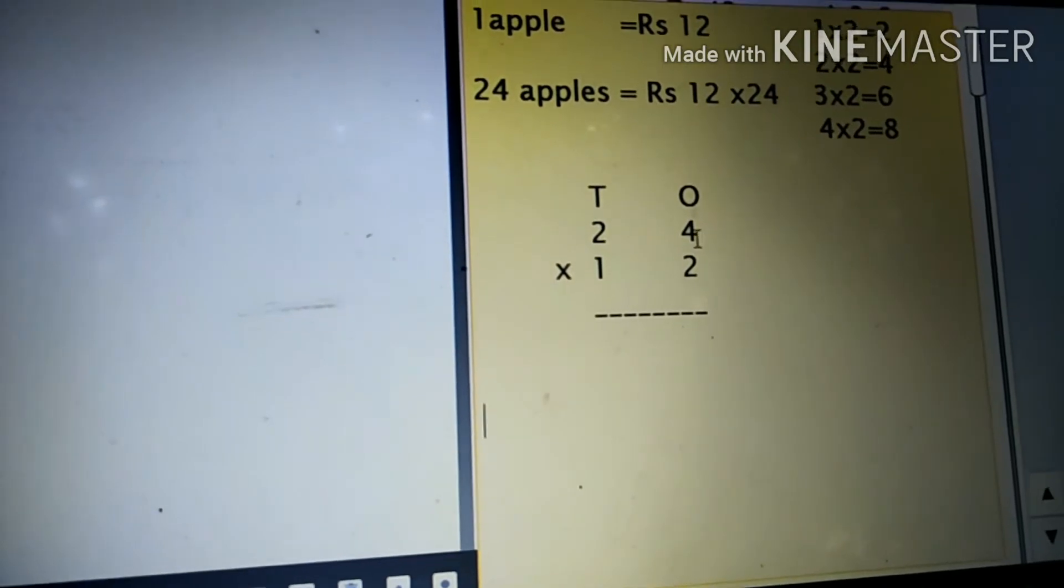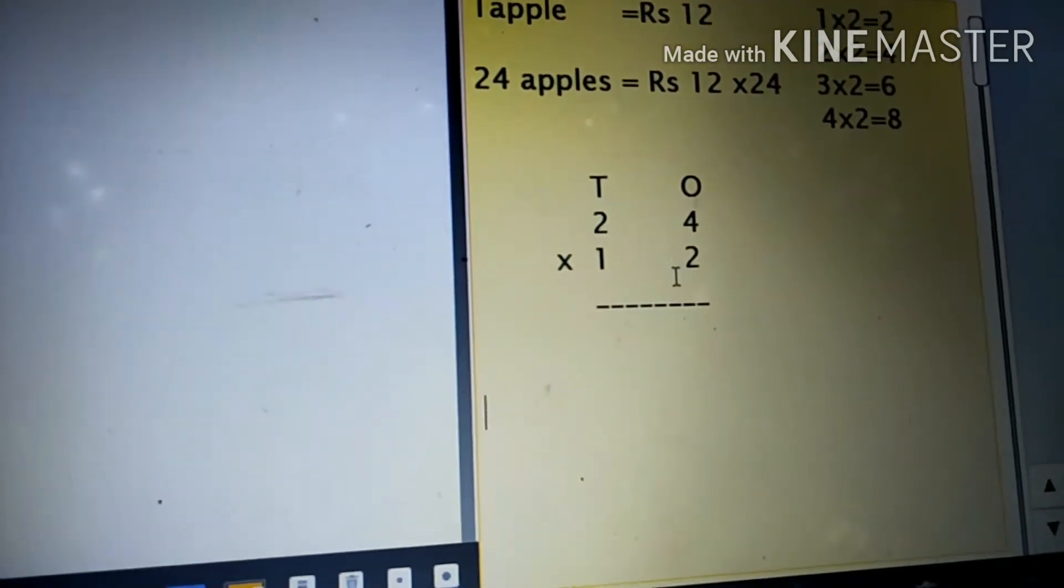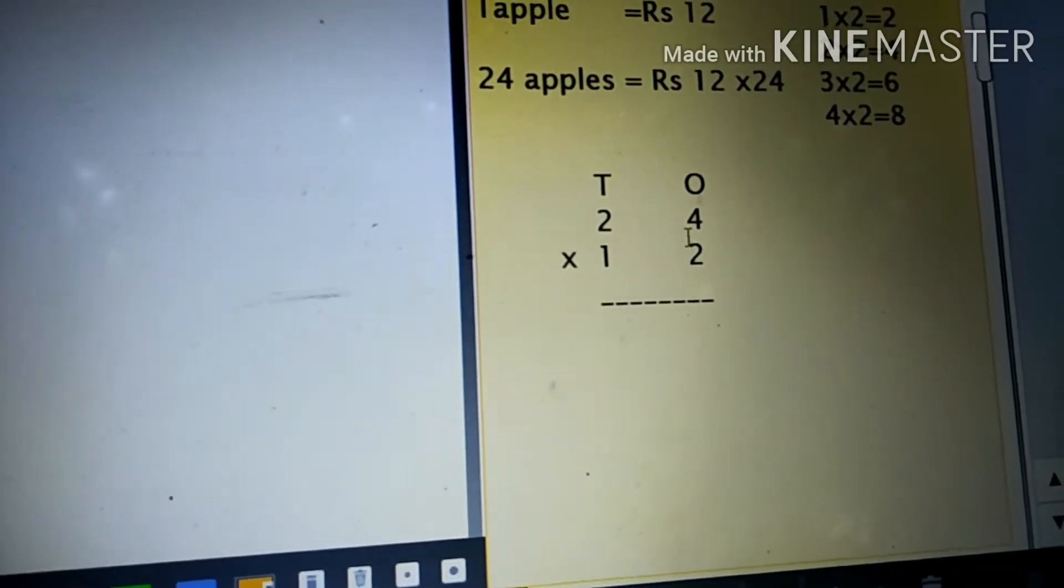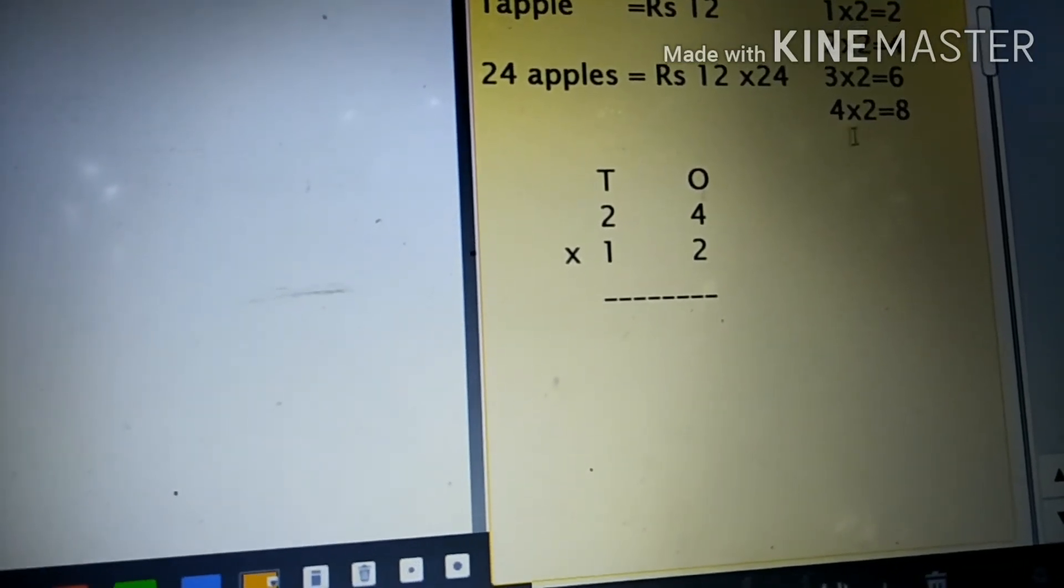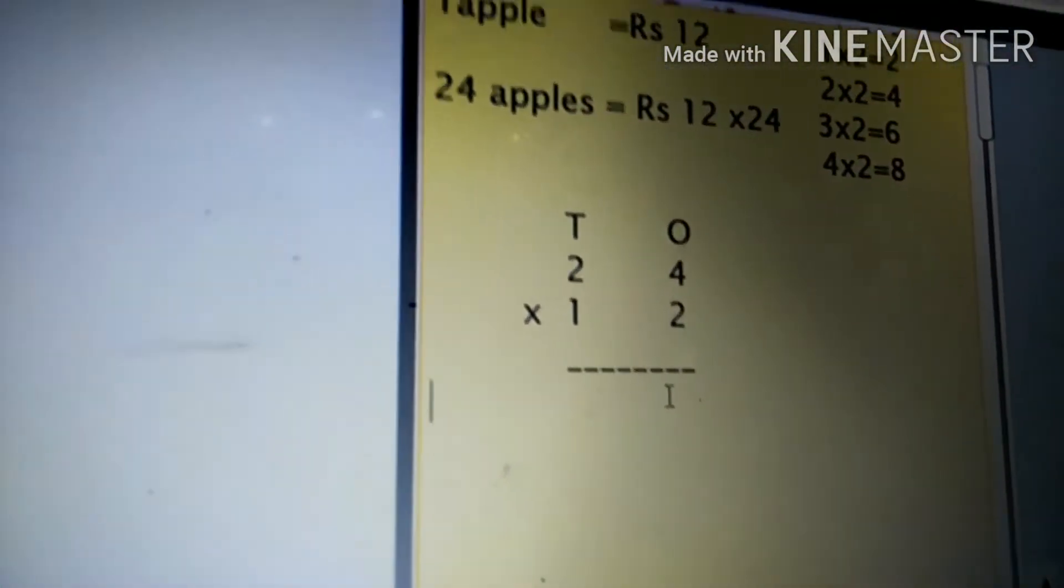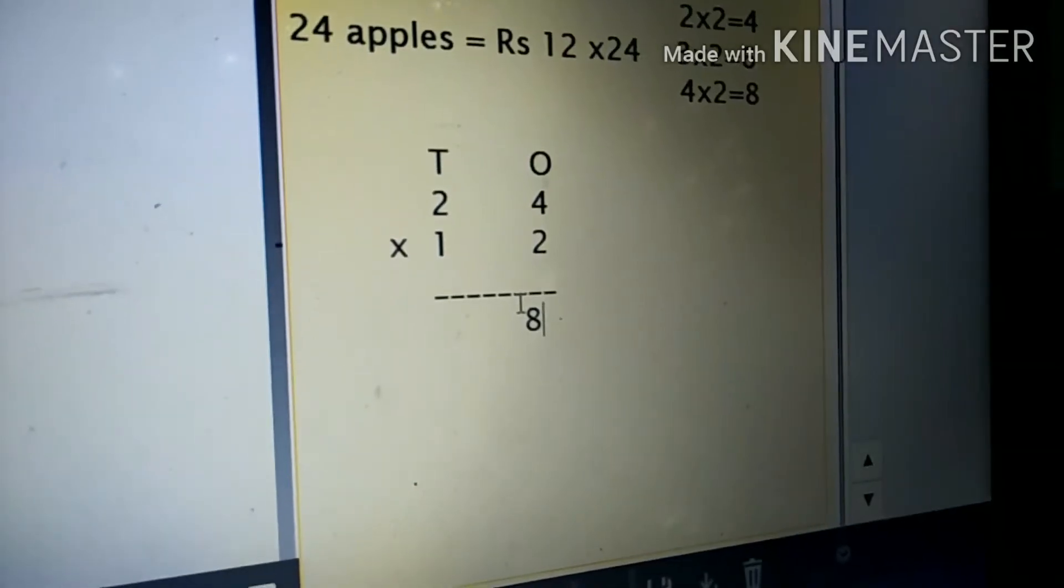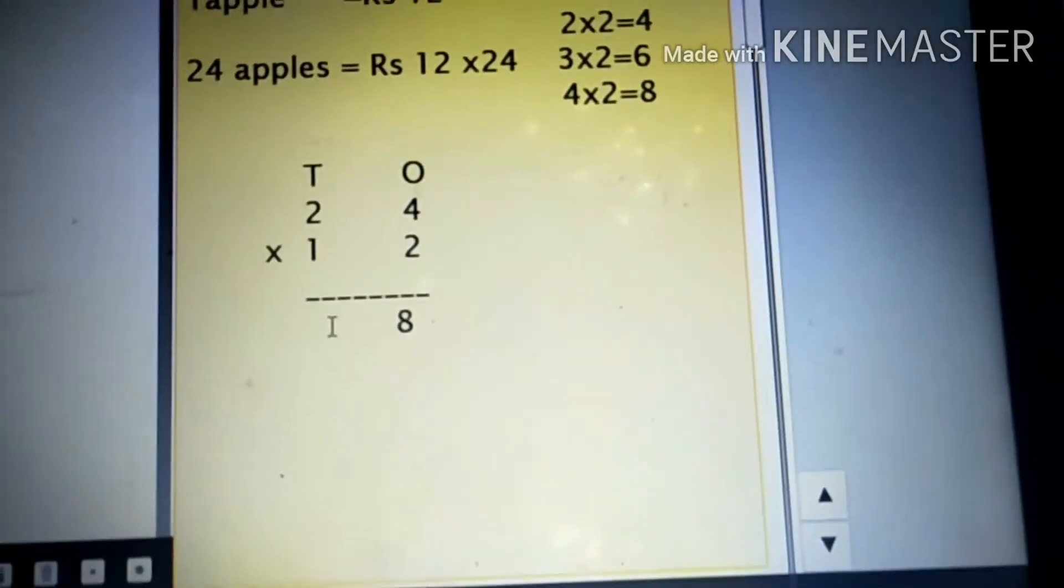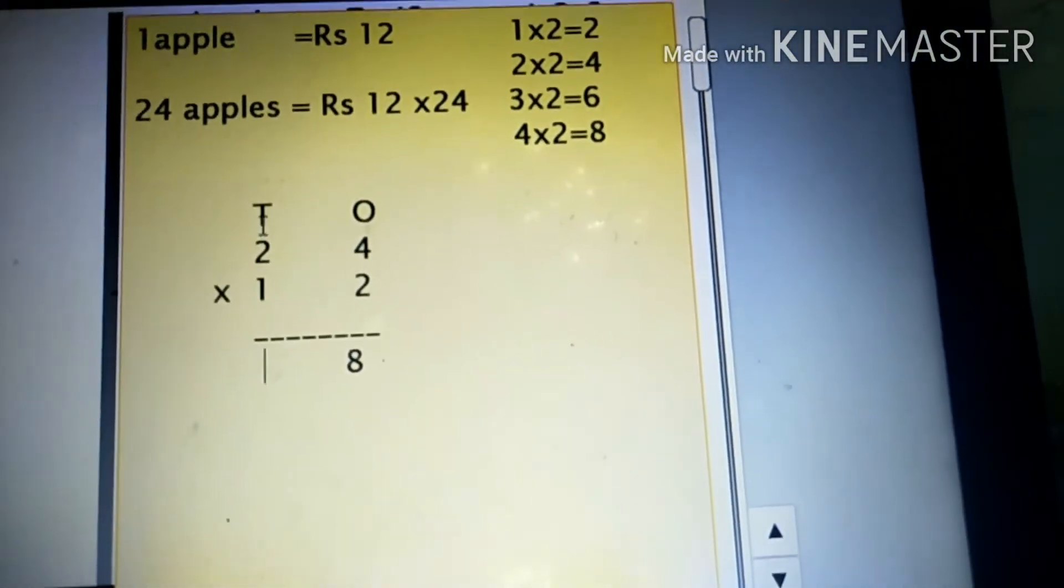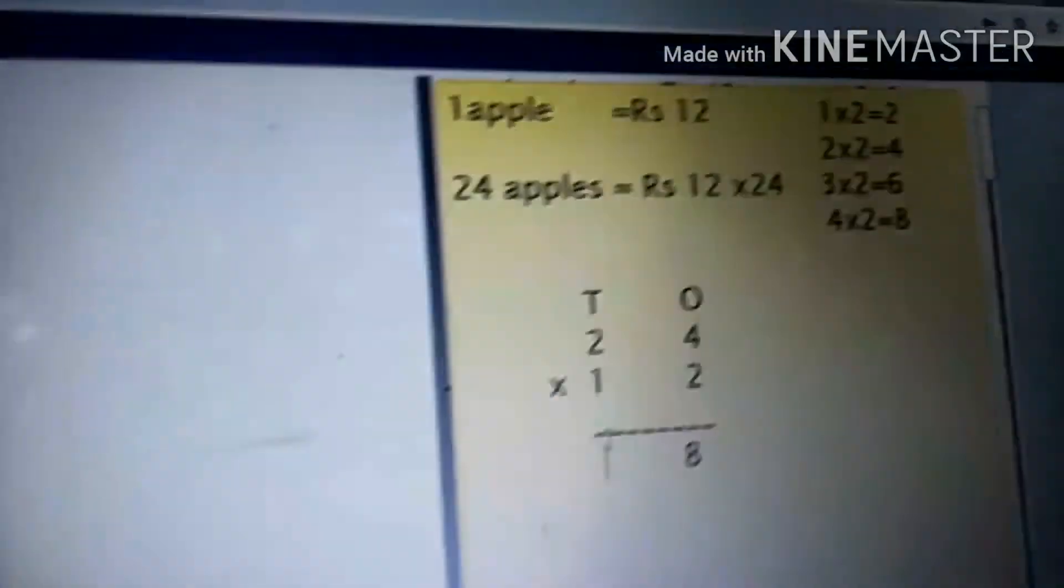Now come to the ones place. Here we have two. So two fours are eight. So I write eight under the ones place. Next, two twos are four. So I write under the tens place, four.